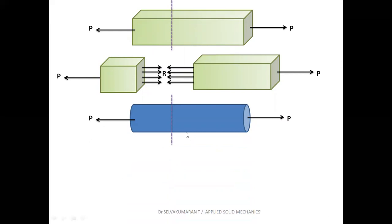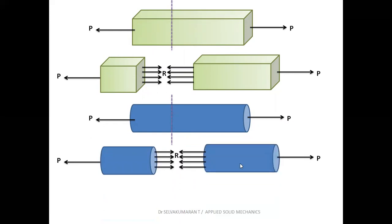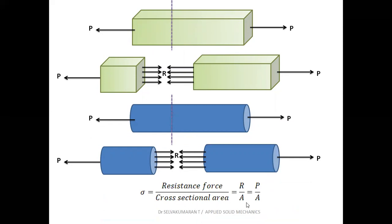For a cylindrical bar, making a cut reveals the internal resistance force offered by the material. Again, for equilibrium, the resistance force R equals the external load P. Therefore, stress equals resistance force divided by cross-sectional area, R by A. Since R equals P, we can write stress equals load by area, that is P by A.